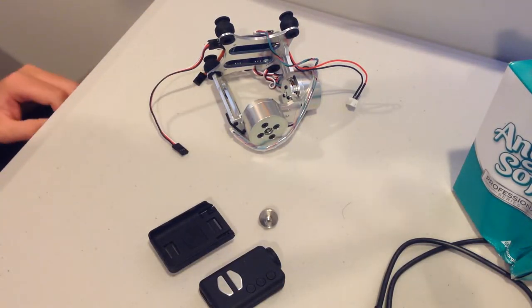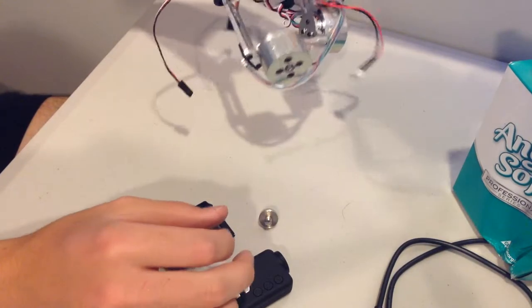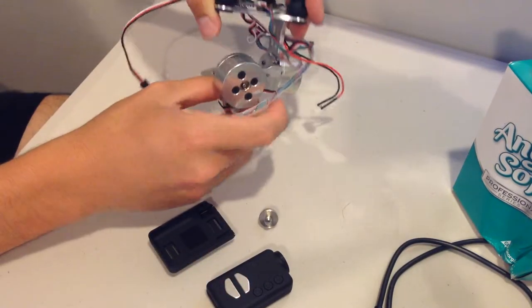In this video I'm going to show you how to mount your Mobius action camera onto your eBay or Banggood GoPro brushless gimbal.